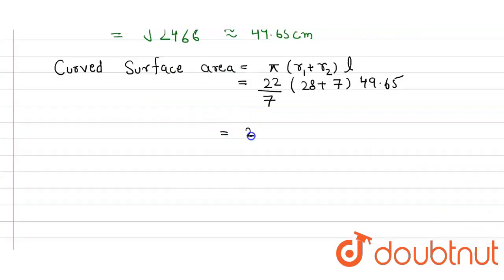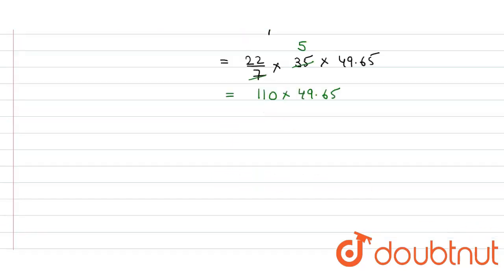So here it equals 22/7 × 35 × 49.65. This 7 cancels this 35 and here we get 5, and then 5 multiply by 22, here we get 110 × 49.65, and when we multiply we get 5,461.5 centimeter square.